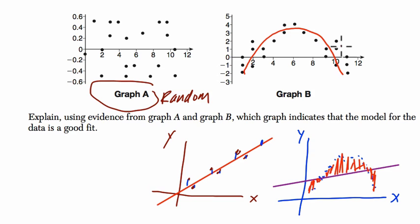So in short, graph A is the better answer. It's a good fit because the points are scattered in a somewhat random pattern above and below the line. All right, thanks.